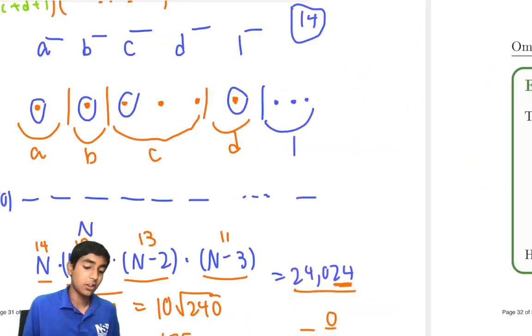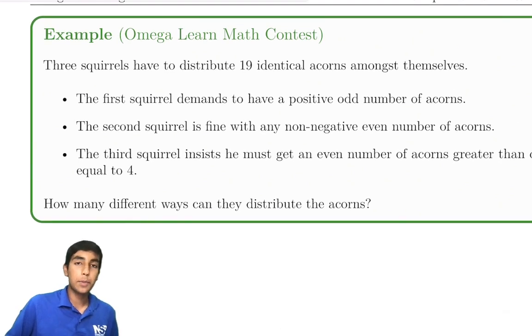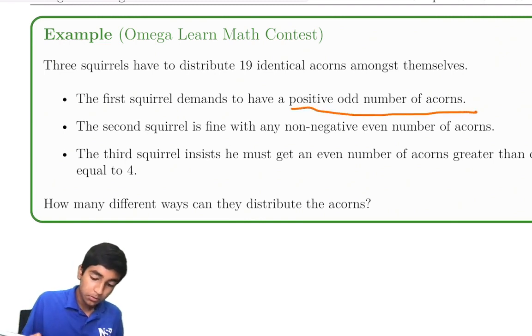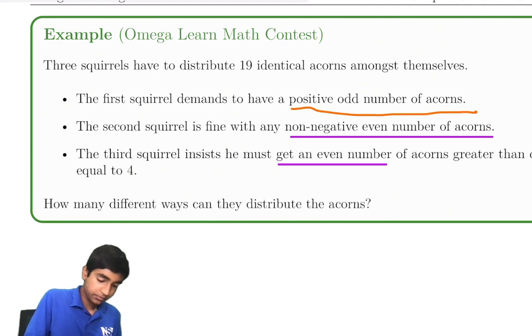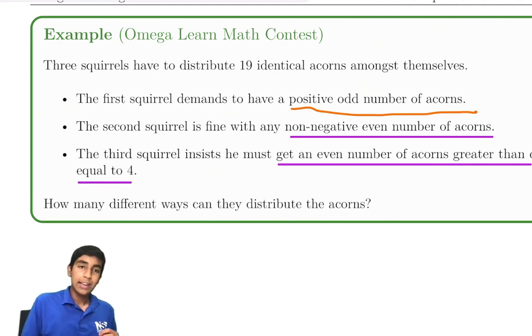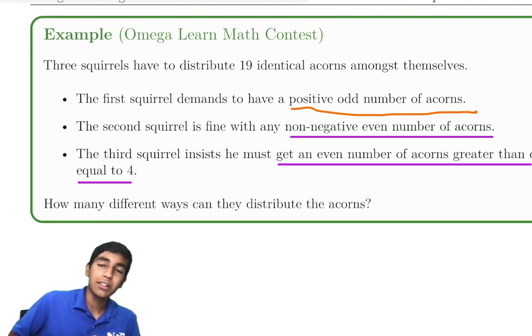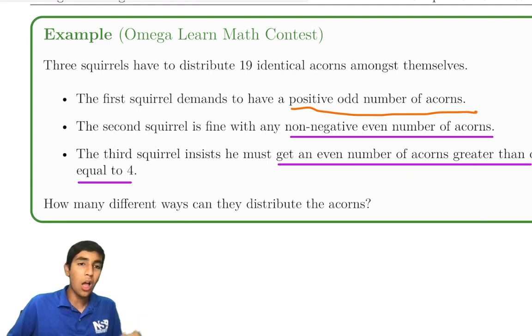Now we'll see another example using the logic behind stars and bars, not the formula. Three squirrels have to distribute 19 acorns amongst themselves. The first squirrel demands a positive odd number of acorns. Second squirrel is fine with any non-negative even number of acorns. The third squirrel insists on getting at least 4 and an even number. How many different ways can they distribute the acorns?